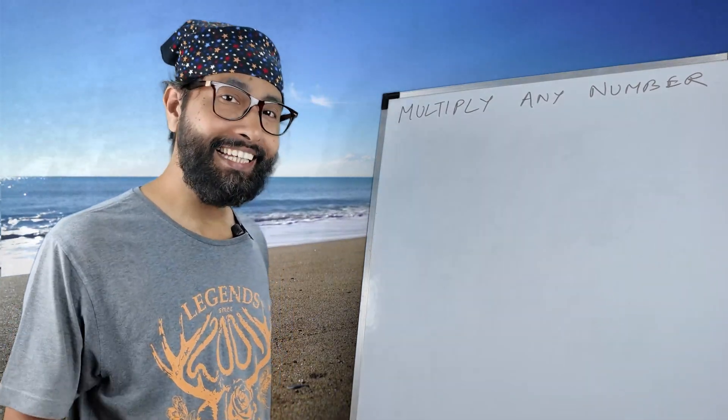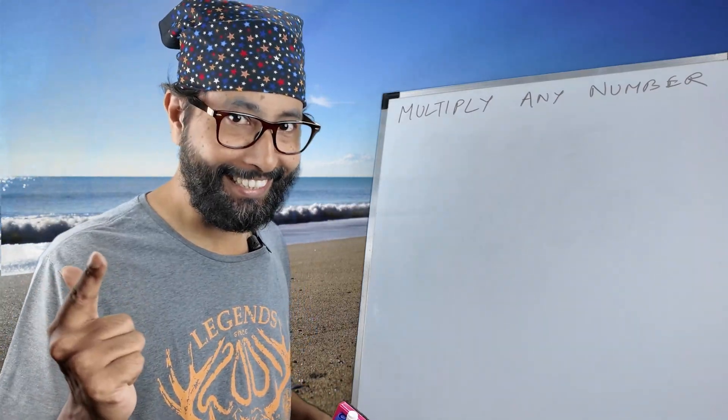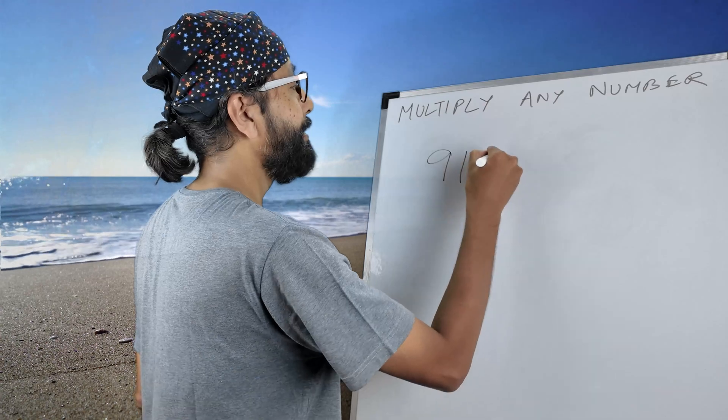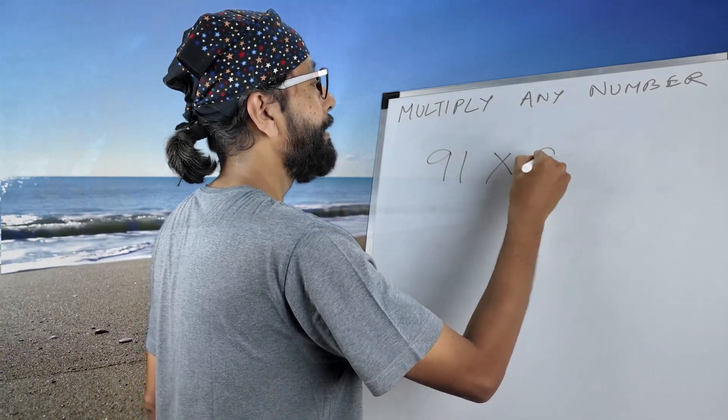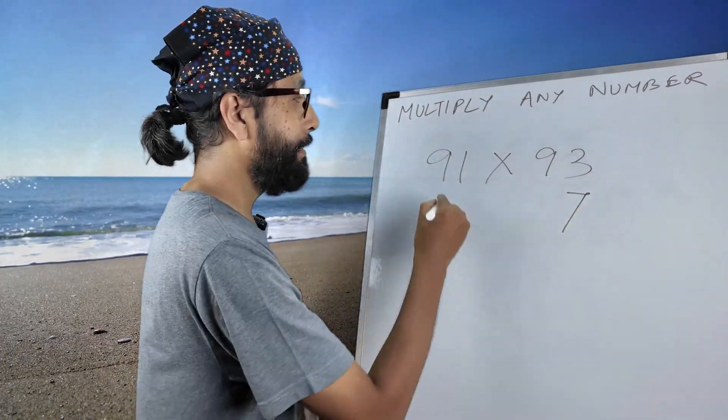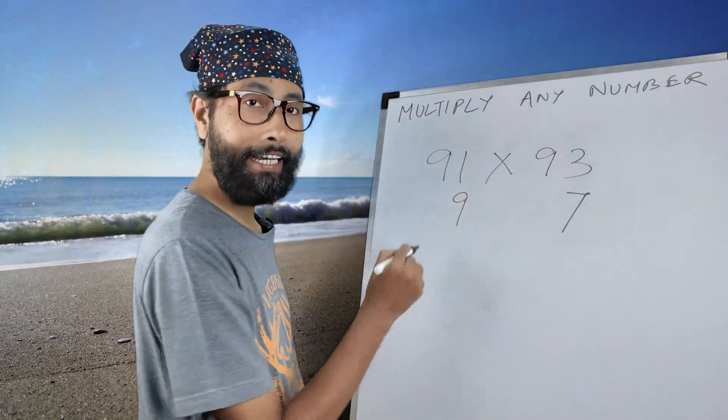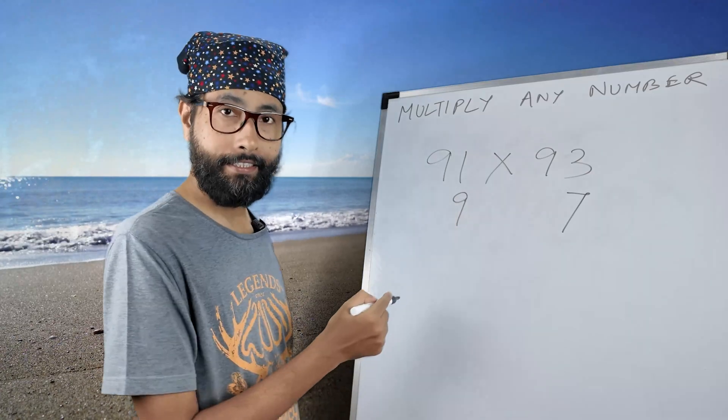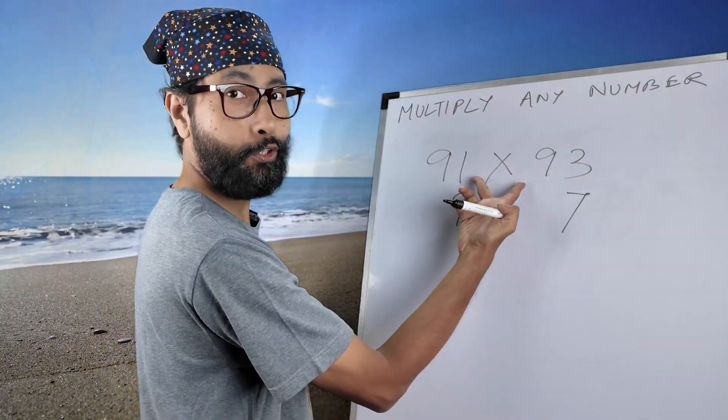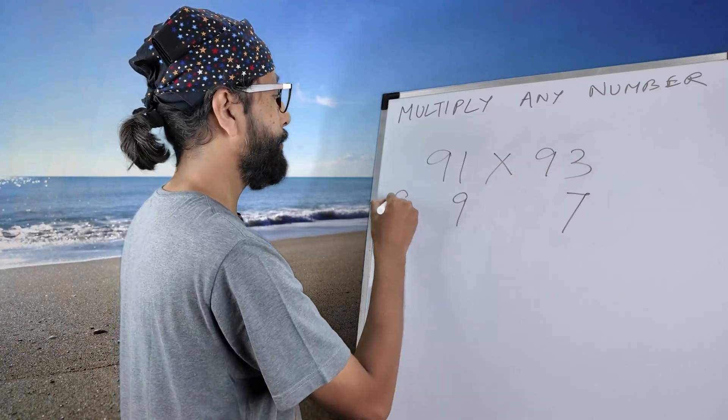Let me show you the next one - easier one, definitely. Slowly we will go to the tough one, but trust me, if you see this carefully up to the end, you will be an expert just like this. So maybe 91 multiplied by 93. This is 7, this is 9. 100 minus 9 is 91, right? So these two numbers will be switched. 93 will come here.